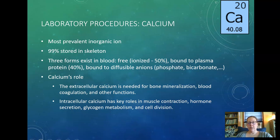Calcium is important in the clotting cascade. Intracellular calcium has key roles in muscle contractions — especially skeletal, heart, and smooth muscles — as well as hormone secretion, glycogen metabolism, and cell division. So calcium is very important all over the body.